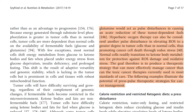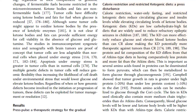Calorie restriction and restricted ketogenic diets serve as a press disturbance. Calorie restriction, water-only fasting, and restricted ketogenic diets reduce circulating glucose and insulin levels, while elevating circulating levels of ketone bodies. Ketogenic diets are low-carbohydrate, high-fat diets that are widely used to reduce refractory epileptic seizures in children. The ketogenic diet can more effectively reduce glucose and elevate blood ketone bodies than can calorie restriction alone, making the ketogenic diet potentially more therapeutic against tumors than calorie restriction.